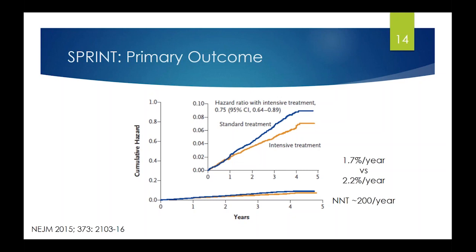The primary outcome was a composite of fatal and non-fatal cardiovascular events. Participants randomized to intensive treatment had about a 25% lower rate of the primary outcome. However, absolute event rates were fairly low: 1.7% per year in the intensive arm versus 2.2% per year in the standard arm, giving a number needed to treat of 200 patients per year to prevent one fatal or non-fatal cardiovascular event. Kaplan-Meier curves for all-cause death looked very similar.